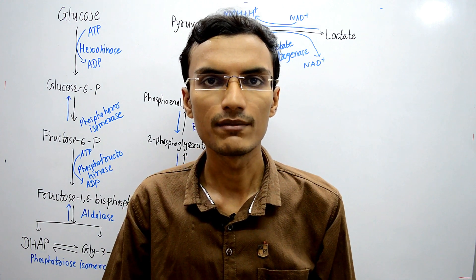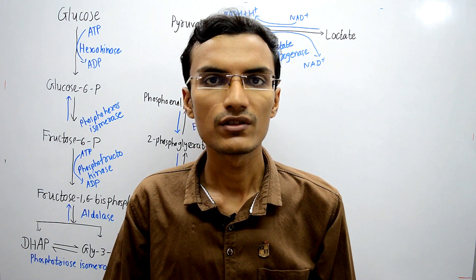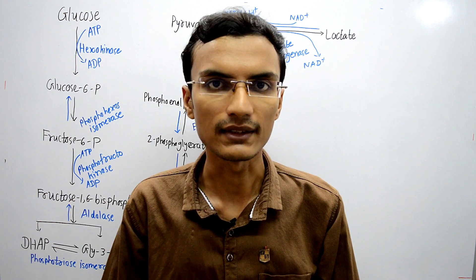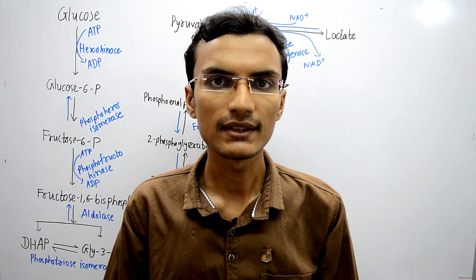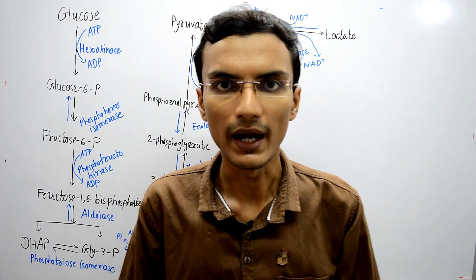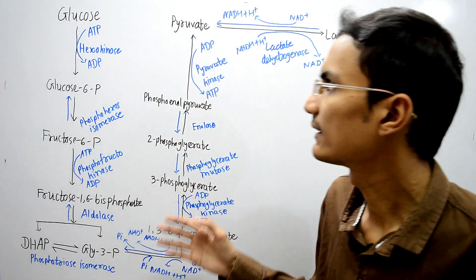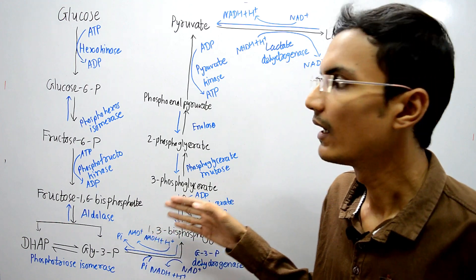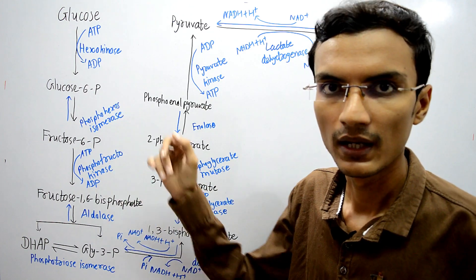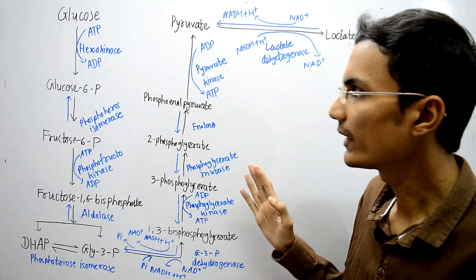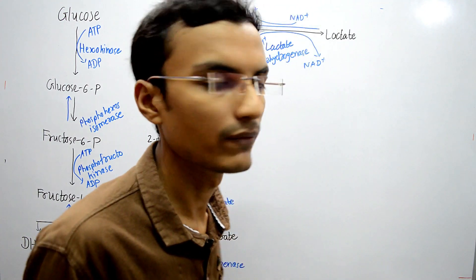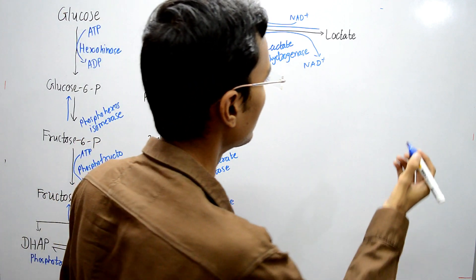Hello friends, welcome to Sandeep's Biology. In this video I will be talking about the process of gluconeogenesis. Gluconeogenesis is just a reverse process of glycolysis — the glycolysis process I have already written here, and we will reverse it back to produce glucose. Before talking about these reactions, let's see some information related to gluconeogenesis.